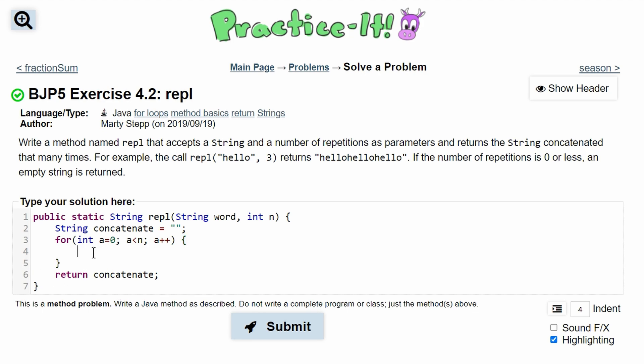Inside the loop, we need to continuously add to our string. We'll do concatenate plus equals word. That way, it keeps adding to the previous sum. What's happening is we have our string concatenate that's going to store our word concatenated n many times.